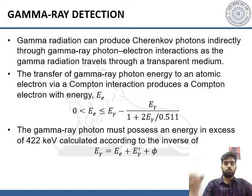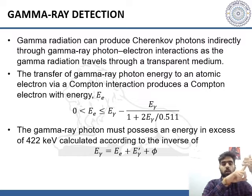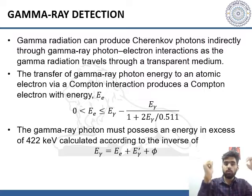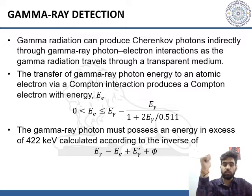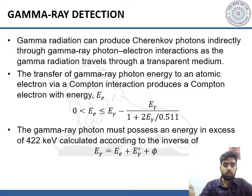Cherenkov radiation can be used for gamma ray detection. Gamma radiation can produce Cherenkov photons indirectly through gamma ray photon-electron interaction. As gamma radiation travels through a transparent medium, the transfer of gamma ray photon energy to an atomic electron via Compton interaction produces a Compton electron with the energy given by the expression shown here.